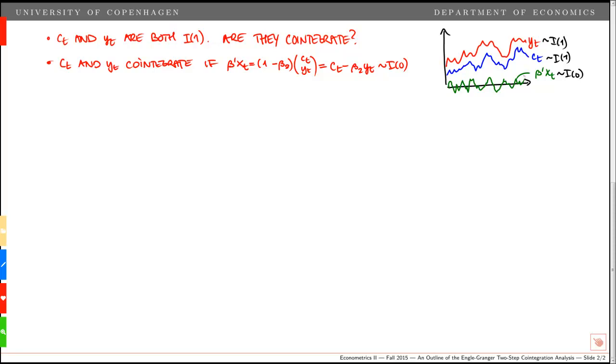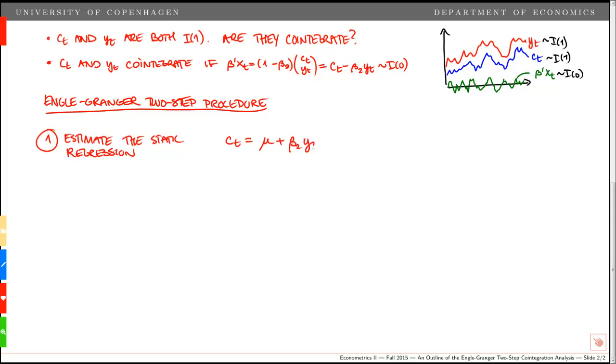In this video we want to outline the Engel-Granger two-step procedure. The first step, we estimate the static regression ct equal to mu, a constant term, plus beta 2 yt plus a residual ut. And we can call this star.